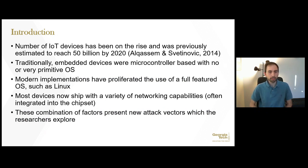The number of IoT devices has been on the rise and was previously estimated to reach 50 billion by 2020. This statistic was cited in the researchers' paper written nearly two years ago. However, present numbers today vary a lot depending on what is defined as an IoT device, but estimates range from 10 to 20 billion. The end result is that there are many devices connected on the global Internet.